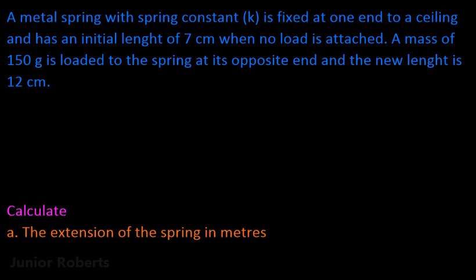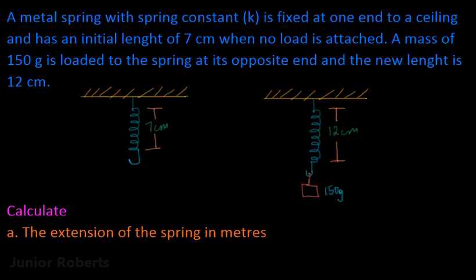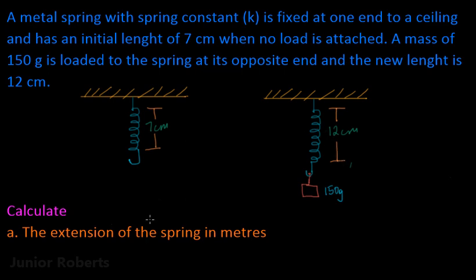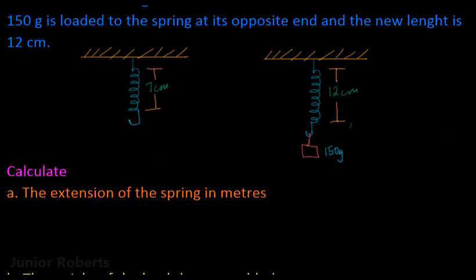First, we're going to come up with a simple sketch which illustrates exactly what this question is saying. Here we have the spring without any load attached and the length of the spring is seven centimeters. Then as soon as the 150 gram load is added, the new length of the spring is now 12 centimeters. The first thing the question wants us to calculate is the extension of the spring in meters.